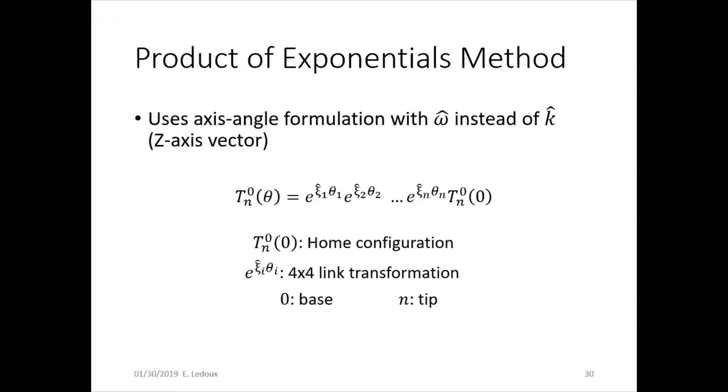The e^(ξ̂θ) is a 4x4 link transformation, and so there's one of those that matches to every single link, and then you multiply all those in front times the home configuration and it gives the transformation for the current position of the robot.